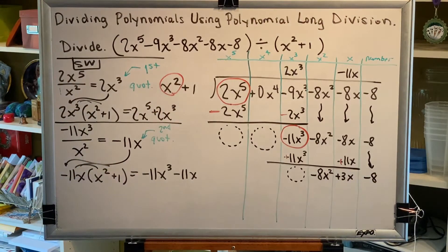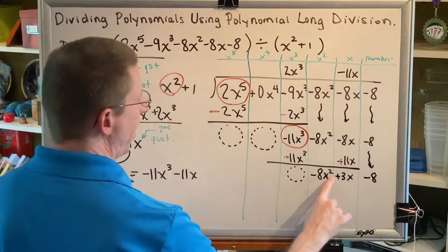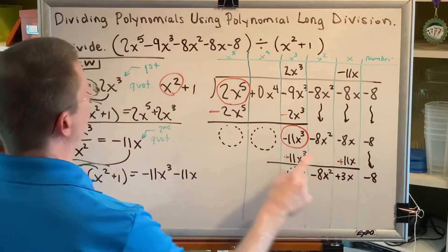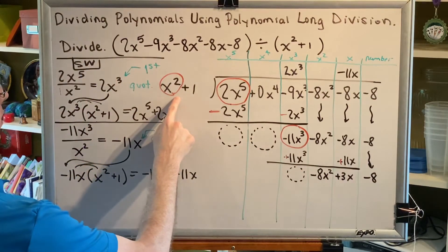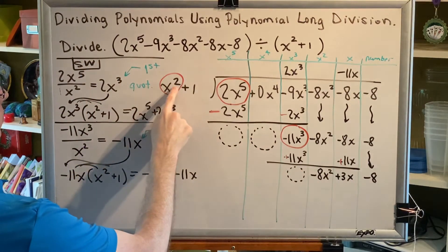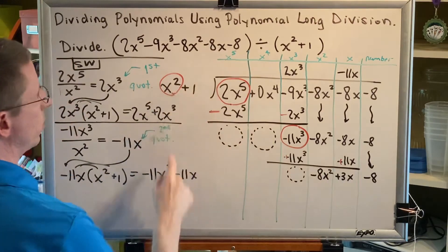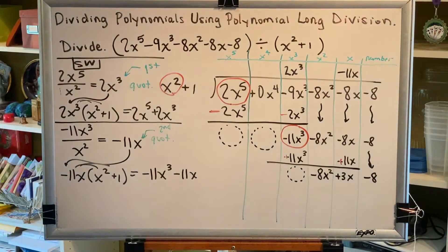Now compare exponents. The largest exponent of the lowest under is 2, and the largest exponent of the original denominator is 2. Is 2 less than 2? No, so we keep going.